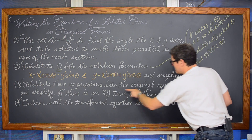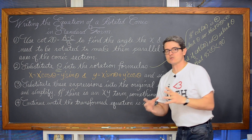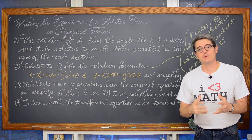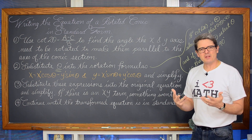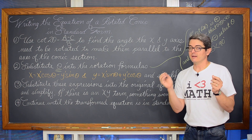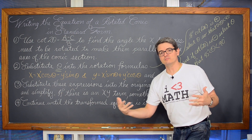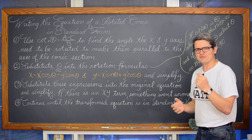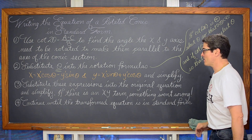Substitute these expressions into the original equation and simplify. If you still have an xy term after doing this transformation, you have made a mistake — whether in finding the angle theta or, more likely given the amount of work involved, an algebraic error somewhere in the long process. You should have the xy term gone.